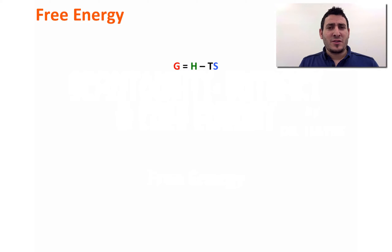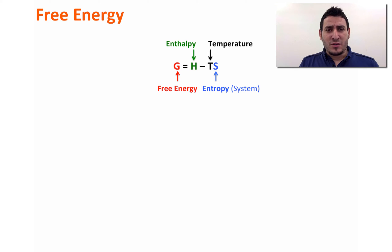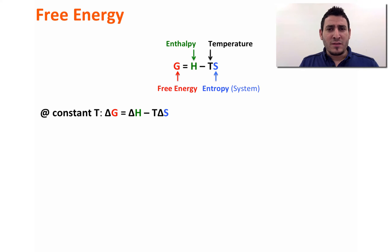Free energy is another thermodynamic function described as follows. G, which is the free energy, is equal to the enthalpy H minus the temperature multiplied by entropy S. At constant temperature, we can say that the change in free energy is equal to the change in enthalpy minus the temperature multiplied by the change in entropy.